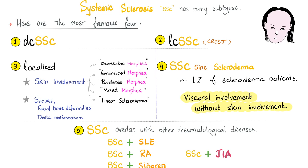Type 4: systemic sclerosis sine scleroderma — systemic visceral involvement without the skin disease. This is about 1% of scleroderma patients. The last type is systemic sclerosis overlapping with something else, such as lupus, rheumatoid arthritis, Sjögren's, juvenile idiopathic arthritis, or dermatomyositis.